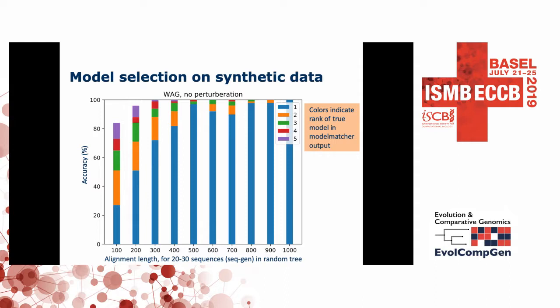I implemented this in a tool I call Model Matcher and tried it on synthetic data. It works very well — not quite as well as maximum likelihood, but looking at the blue bars here corresponding to the correct top prediction, for relatively small multiple sequence alignments you do pretty well. If the alignment has 500 columns and 20 to 30 sequences, you can more or less trust the suggestion from my predictor. The quality goes down with less data, which is not surprising. If we look at the top five predictions, we are actually very close to the prediction quality from maximum likelihood methods.